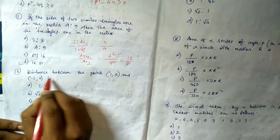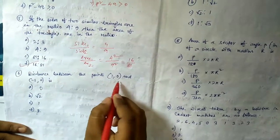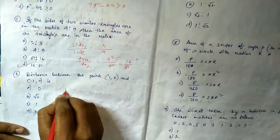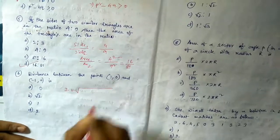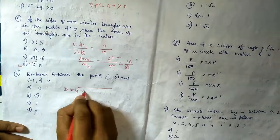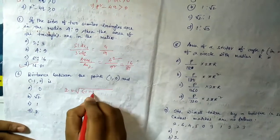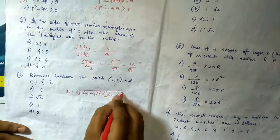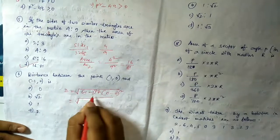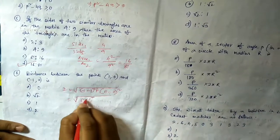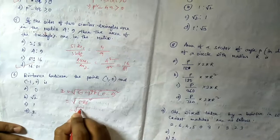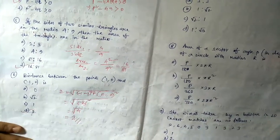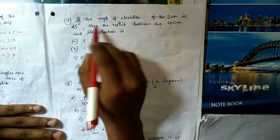Question number six: find the distance between the points (1, 0) and (-1, 0). Using the distance formula: √[(x₂ - x₁)² + (y₂ - y₁)²] = √[(-1 - 1)² + (0 - 0)²] = √[(-2)²] = √4 = 2. The answer is 2.